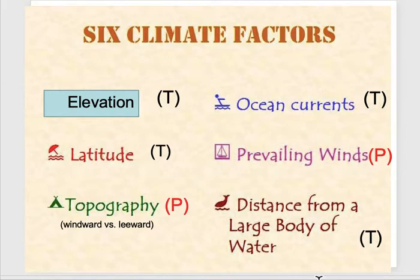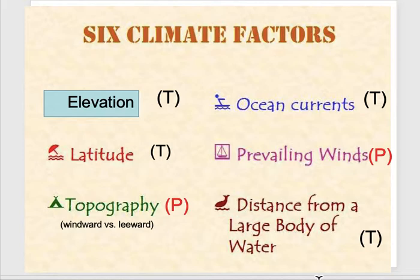Ocean currents: if you're near a warm current from the equator your climate will be warmer than expected, and if you're near a cold current from the poles you will have a climate that is colder than expected. Prevailing wind belts are in your reference table. Zero degrees latitude has a wet climate because of rising air, and so does 60 degrees latitude. Thirty degrees latitude and 90 degrees latitude are in sinking air zones, so those will have dry climates.